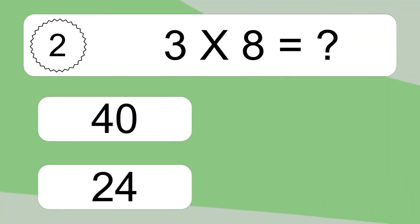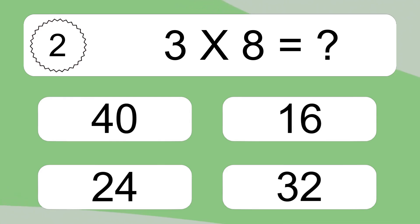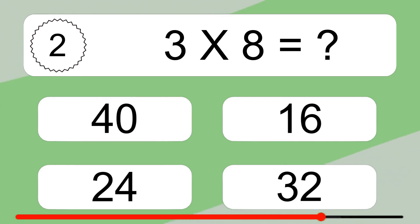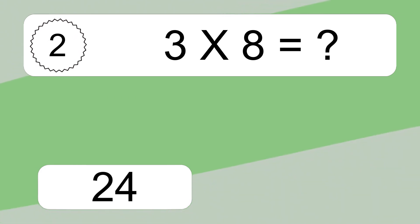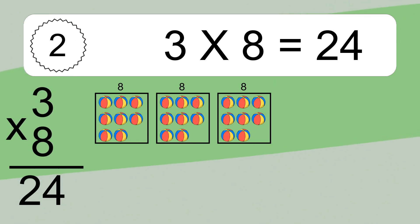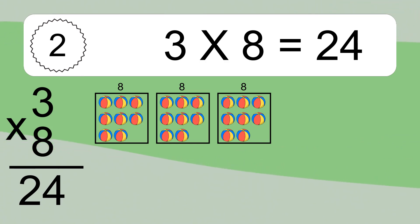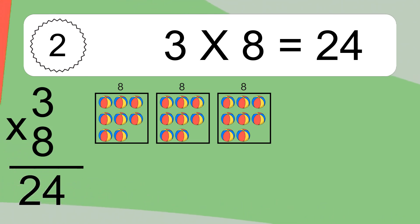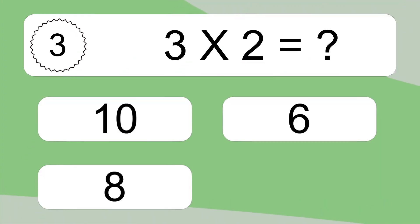3 times 8 equals what? 3 times 8 equals 24. We have 3 boxes, and each box has 8 colorful balls inside. If you count all the balls in all the boxes together, you will have 3 times 8 balls. This equals 24 balls.